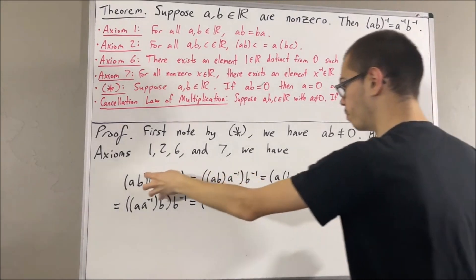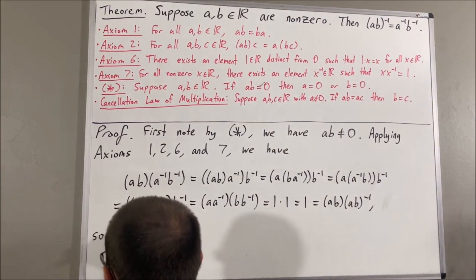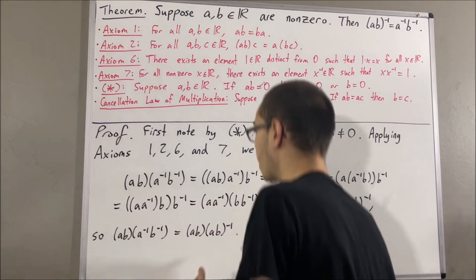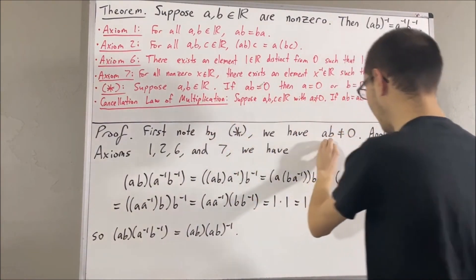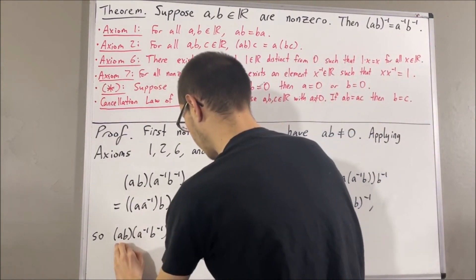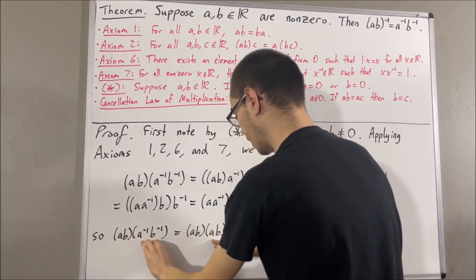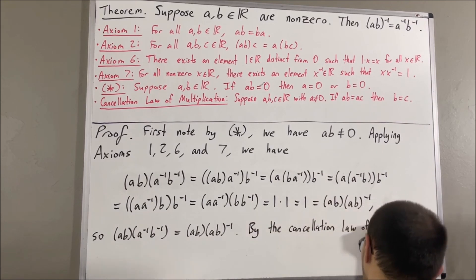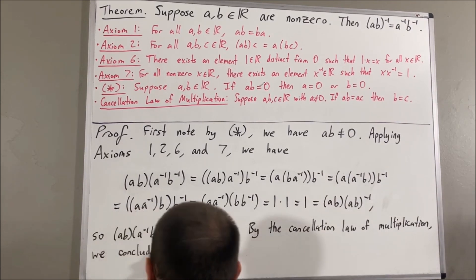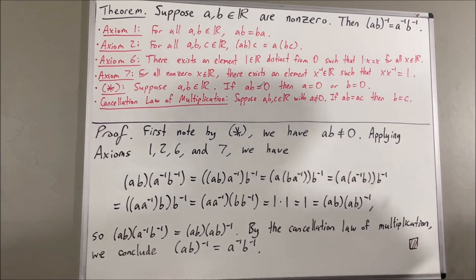So now, through this chain of equalities, we have shown that those two expressions are equal. We're in a position to apply the cancellation law of multiplication. Since AB is not equal to 0, we can cancel out AB on both sides, and we're left with the reciprocal of A times the reciprocal of B equals the reciprocal of AB. And that is exactly what we wanted to prove. So that completes the proof, and that's pretty much it for this video.